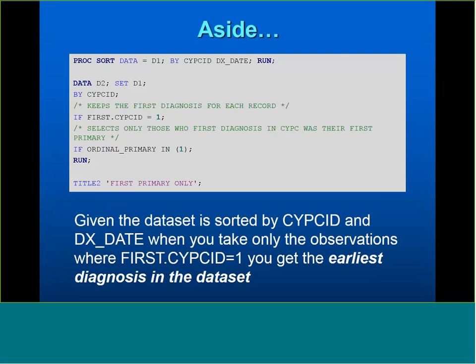An important note: because the data set is sorted by CPSI_ID and diagnosis date, when you take observations on first.CPSI_ID you get the earliest diagnosis. It's critical to pay attention to how you've sorted the data set before setting it by something. Also, whenever you set a data set by a variable in SAS, the data must be sorted in that order — otherwise SAS gives an error. The sort by CPSI_ID and DX_date, combined with setting by CPSI_ID only, helps select the desired diagnosis.